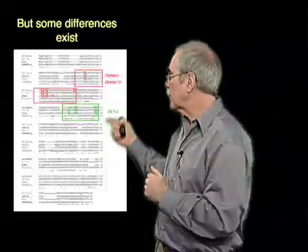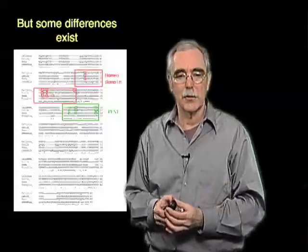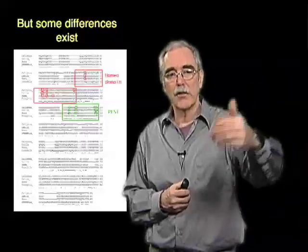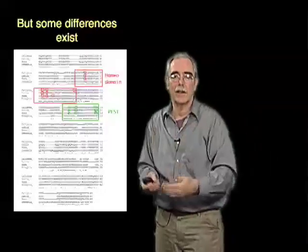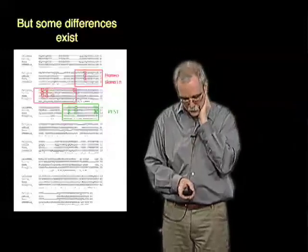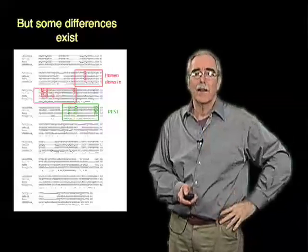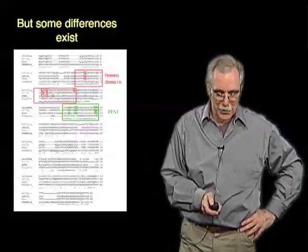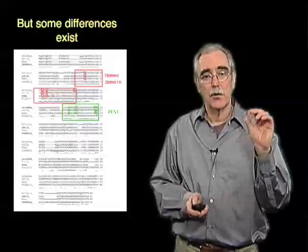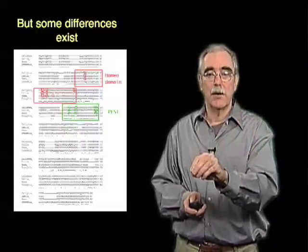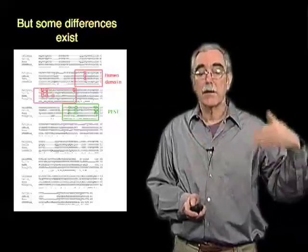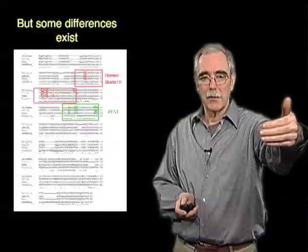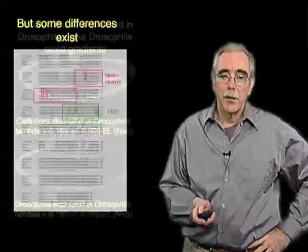One possibility is that these different species-specific bicoids have evolved, and the changes in their sequence — either the ones indicated or other changes in other regions of the protein — are actually responsible for adjusting the shape of the gradient so it can function in larger or smaller eggs. To test that possibility and identify the regions that have changed, Thomas Greger and Alastair McGregor in the lab took these cloned bicoid genes from the other species, tagged them with EGFP, and put them back into melanogaster to ask what type of gradients they make.